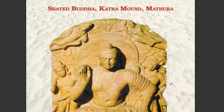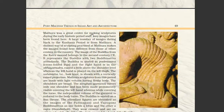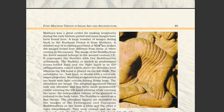Here you can see the image of the seated Buddha, Katra Mound, Mathura. Mathura was a great center for making sculptures during the early historic period, and many images have been found there. A large number of images dating back to the Kushana period is from Mathura. A distinct way of sculpting practiced at Mathura makes the images found here different from those at other centers in the country. The image of the Buddha from Katra Mound belongs to the 2nd century.